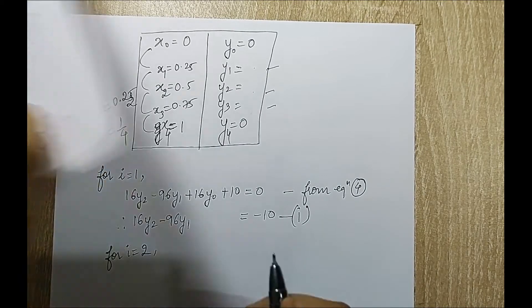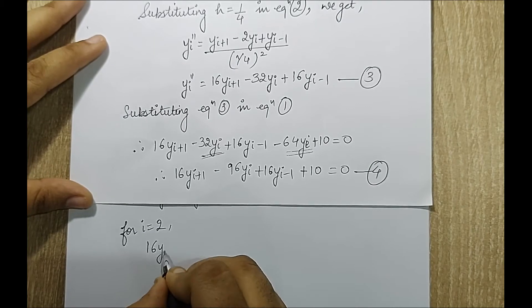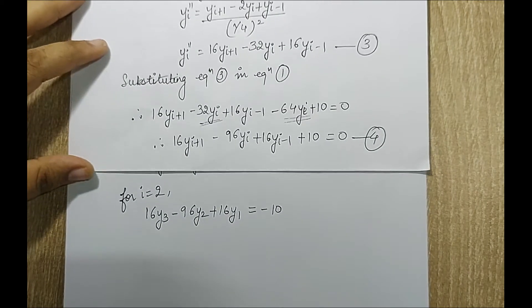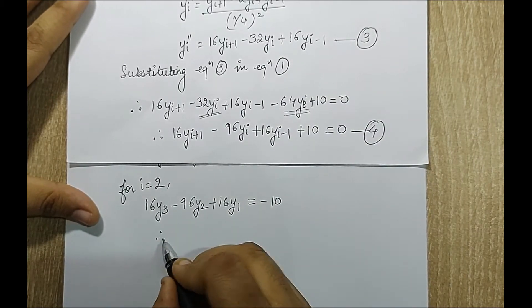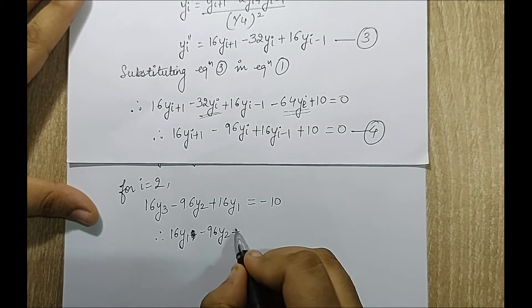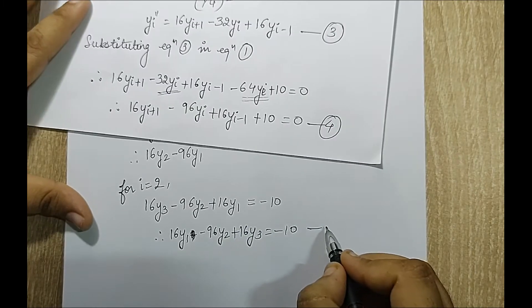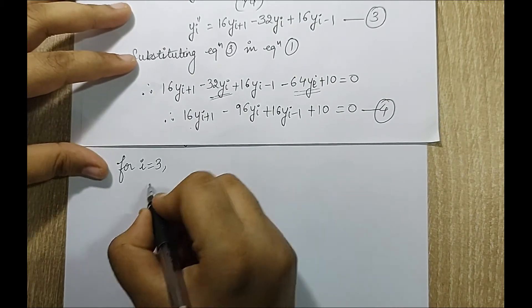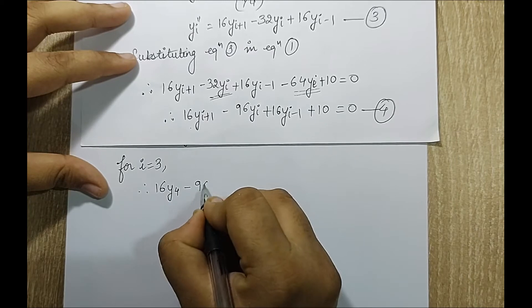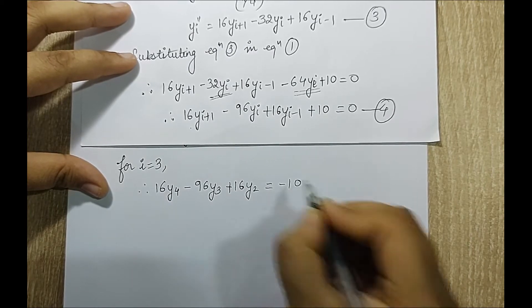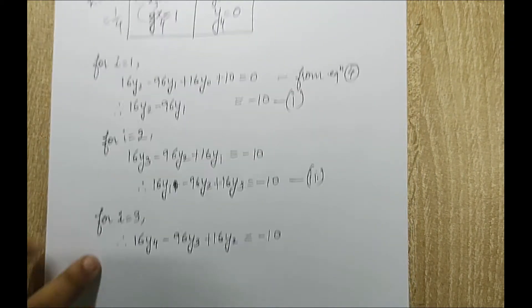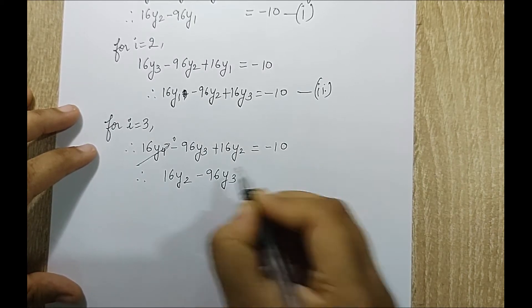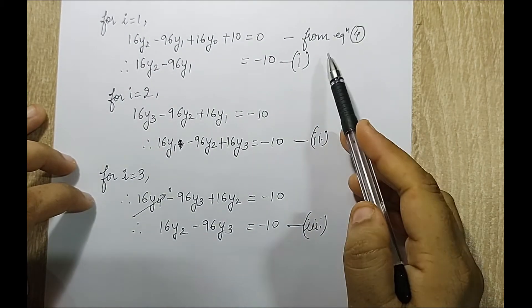For i equal to 2, equation 4 becomes: 16y3 minus 96y2 plus 16y1 equals minus 10. This is equation number 2. For i equal to 3, equation 4 becomes: 16y4 minus 96y3 plus 16y2 equals minus 10. Since y4 is 0, substituting gives: 16y2 minus 96y3 equals minus 10. This is equation number 3.